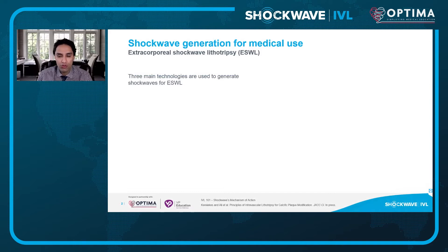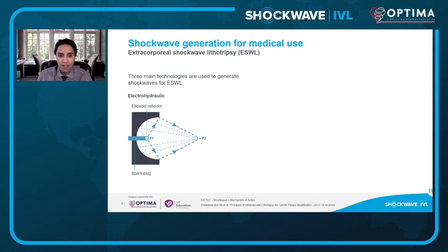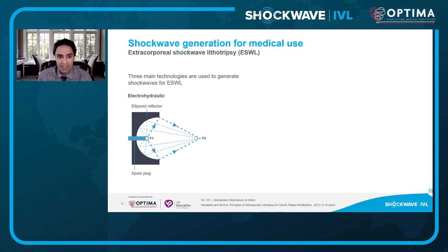Shockwave is generated for medical use traditionally based on extracorporeal shockwave lithotripsy, which is used for renal calculi. There are three main technologies used to generate shockwaves for external shockwave lithotripsy. The first is basically a spark plug with two electrodes in which an electrical arc is created between the two in a fluid-filled cavity, creating unfocused energy that becomes focused based on a reflection from the ellipsoidal reflector — kind of like a flashlight focuses light to go forward instead of spreading everywhere.